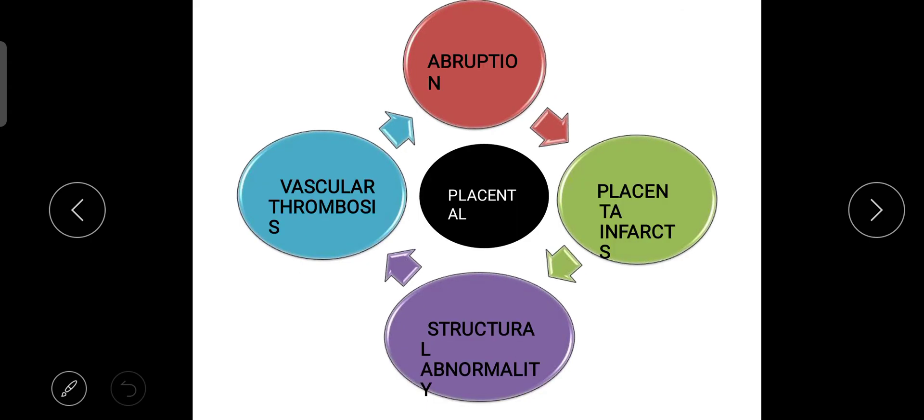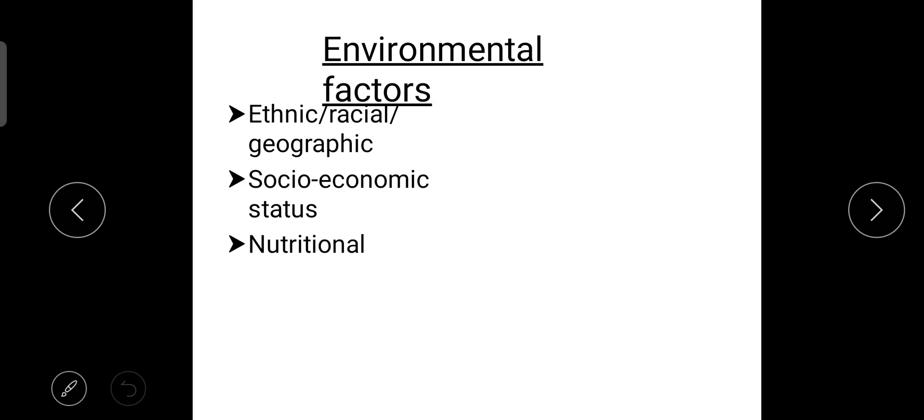Next is placental causes like abruptio placenta or placenta previa or structural abnormalities in the placenta or vascular thrombosis in the placenta. Next is environmental factors. Environmental factors also can cause small for gestational age baby like ethnic or racial, geographic, socioeconomic status, or nutritional factors.